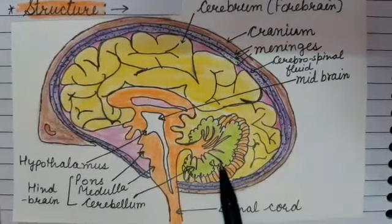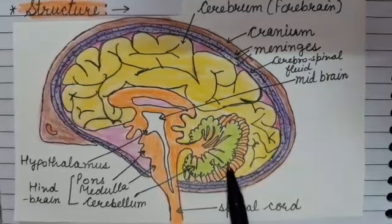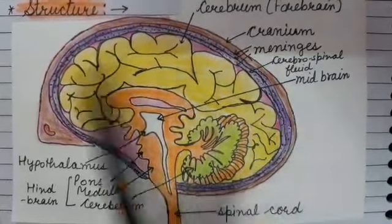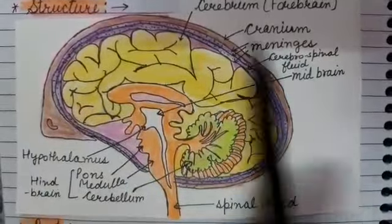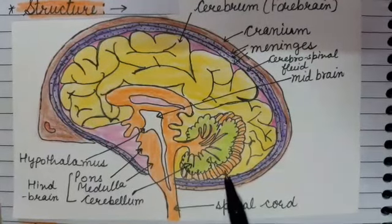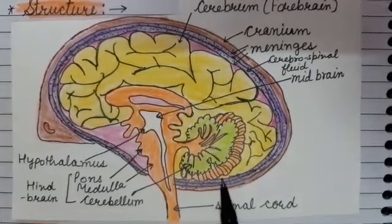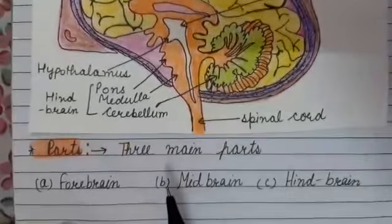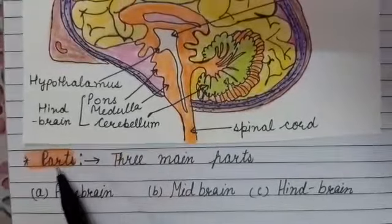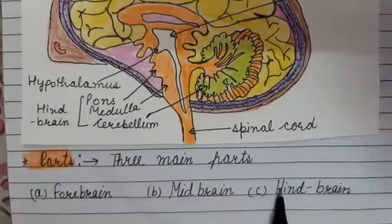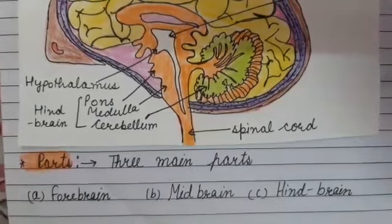You have to learn its diagram, its labeling, and the functions of all the parts — this is very important from the exam point of view. The three main parts of the brain are Forebrain, Midbrain, and Hindbrain. We will study about them turn-wise.